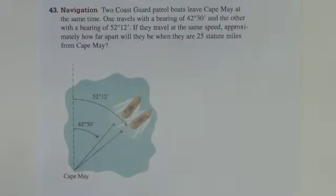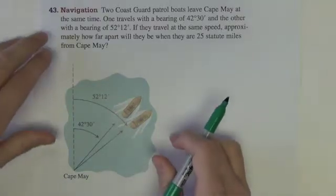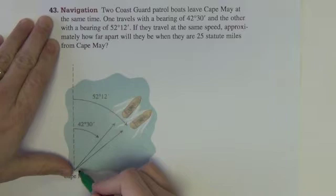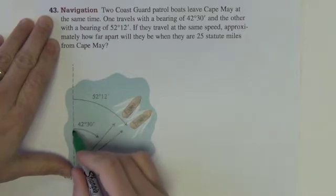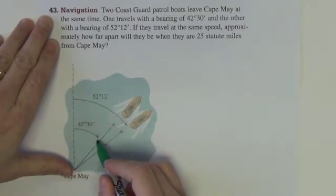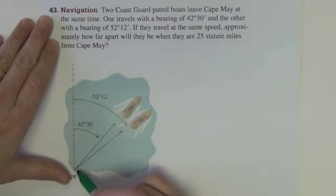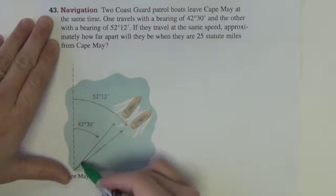Okay, one final example using these arc length formulas. It says two Coast Guard patrol boats leave Cape May at the same time. One travels with a bearing of 42 degrees, 30 minutes, and the other with a bearing of 52 degrees, 12 minutes. If they travel at the same speed, approximately how far apart will they be when they are 25 statute miles from Cape May?